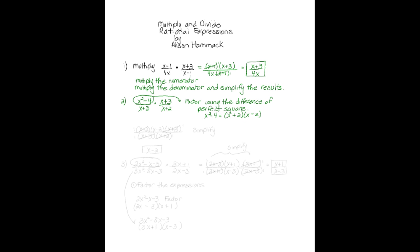Now let's put this back into our problem. We have x plus two times the quantity x minus two in the numerator, x plus three in the denominator. We also have x plus three in the numerator and x plus two in the denominator. We simplify by removing factors that are the same on the top and bottom since they go to one, and our final answer is x minus two.